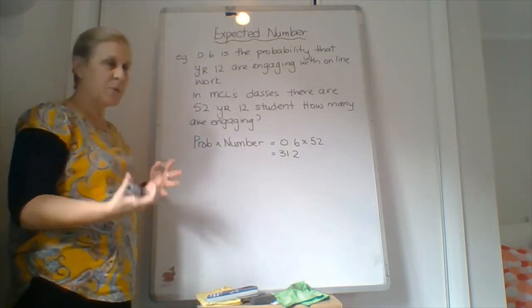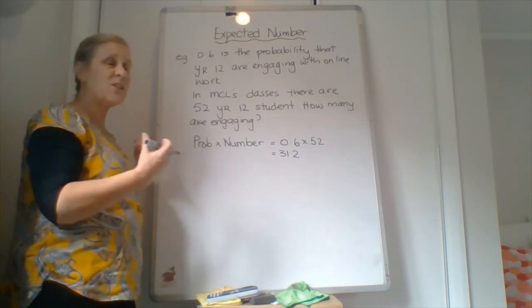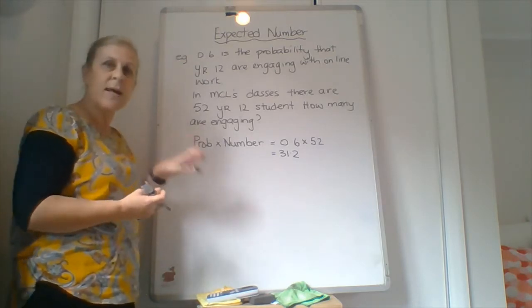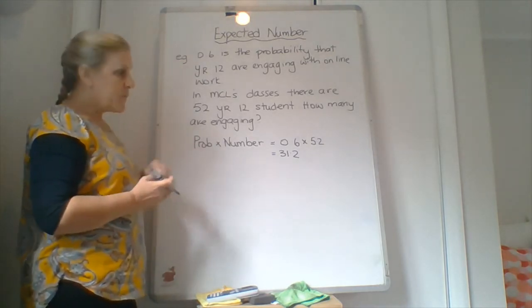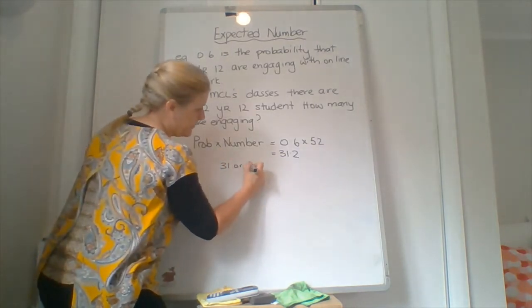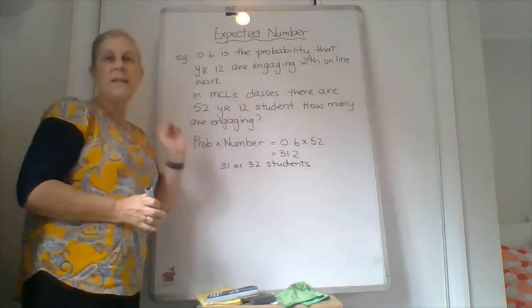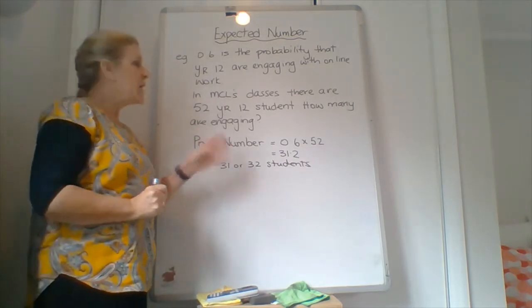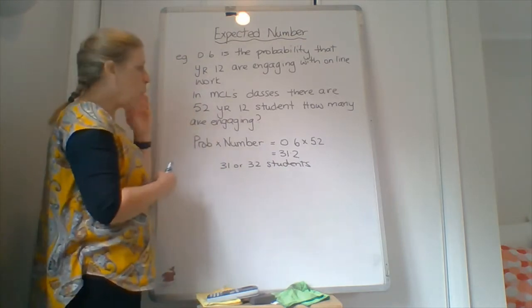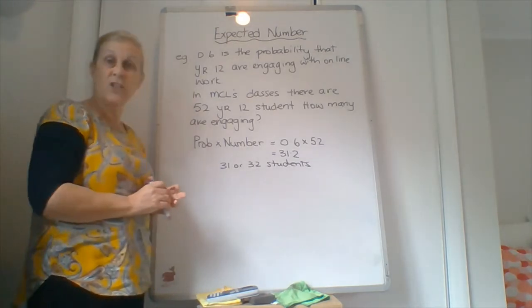Alright, so 31.2 isn't a person and I'm talking about how many students. It will be 31.2 on average out of 52 kids, but we're not averaging. It's a specific number of 52. So therefore it's got to be 31 or 32. So what I mean by that is if I say in any group of 52, then on average it would be 31.2. But I have a specific group, my kids here, of 52 kids. Therefore 31 or 32 students are engaging with online lessons.